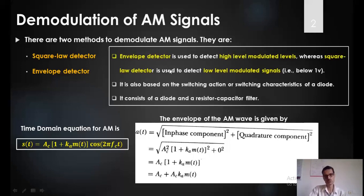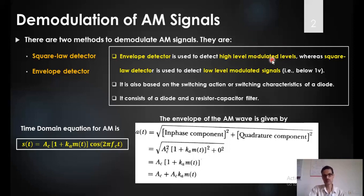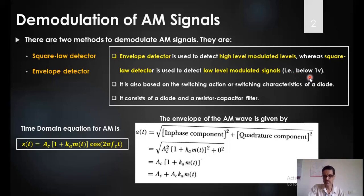The major difference between the envelope detector and square law detector is that the envelope detector is actually used for demodulating high level modulated signals, whereas the square law demodulator is used to demodulate or detect a low level modulated signal — for example, voltage below 1 volt.